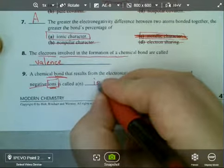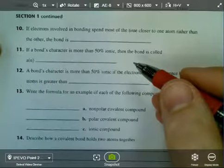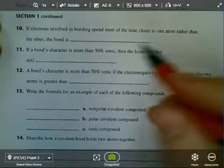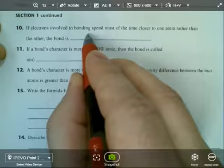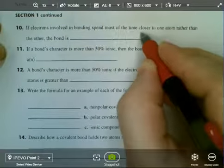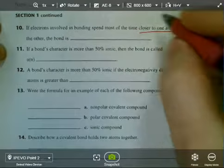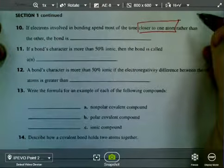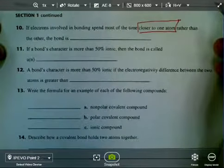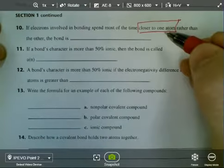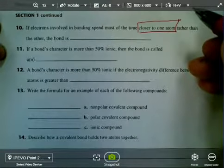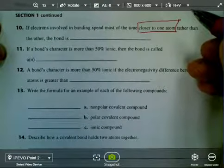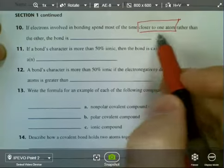Number 10, if electrons involved in bonding spend most of the time closer to one atom rather than the other, the bond is. Now, we have to decode this a little bit. Realize that this is going to exclude the possibility of an ionic bond, because in an ionic bond, it's not closer to one atom rather than the other. It belongs to the other atom. It's not just leaning towards one side. It's been completely transferred. Ownership has changed.